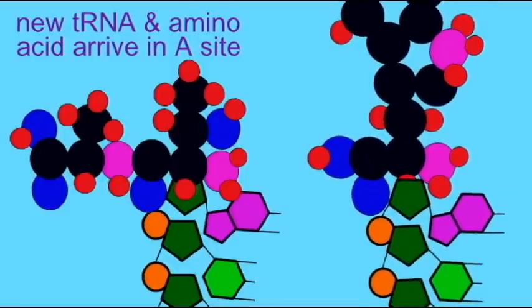The rRNA will continue to form peptide bonds between the amino acid chain which is in the P site and the new amino acid which is in the A site.